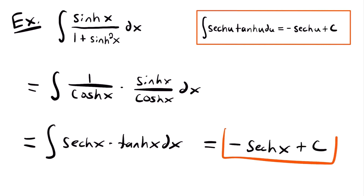Since we just have x in our functions, we don't need u-substitution. We integrate directly to get negative hyperbolic secant of x plus c, which is the solution to this integral. Hopefully this example illustrates the importance of knowing your hyperbolic identities — they make some seemingly impossible integrals much easier to solve.